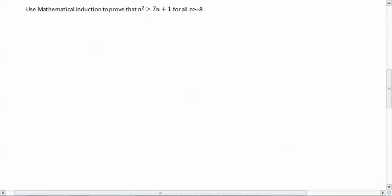Okay, so let's go ahead. Step number one, we're using mathematical induction to prove that n squared is greater than 7n plus 1 for all n greater than or equal to 8. This is a really weird notation. It just means this. Alright, so here we go.